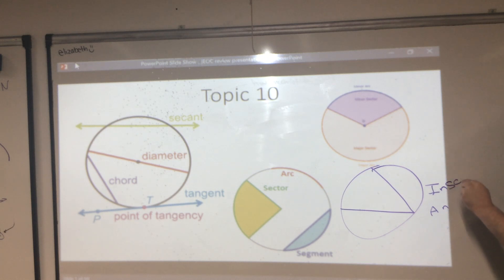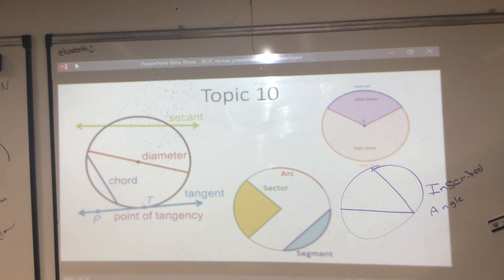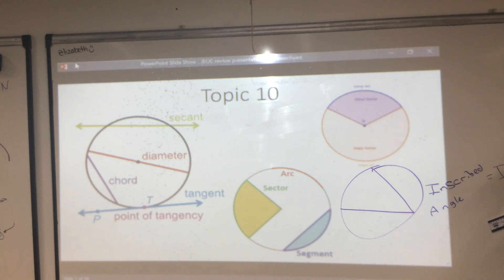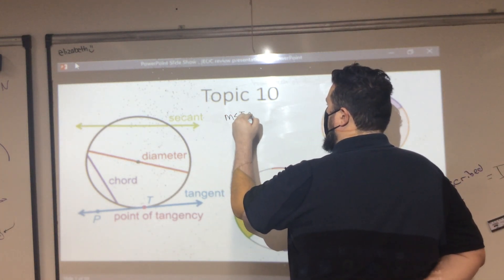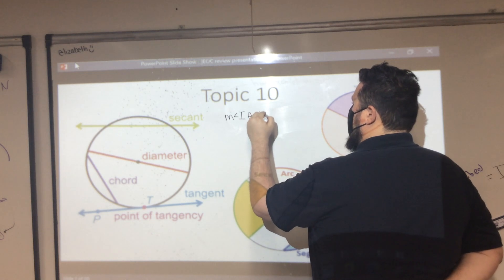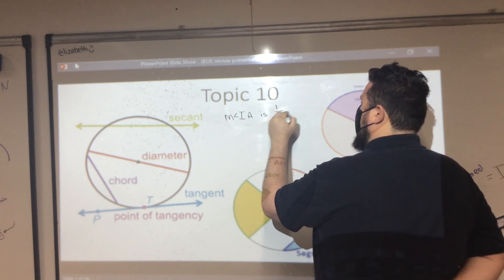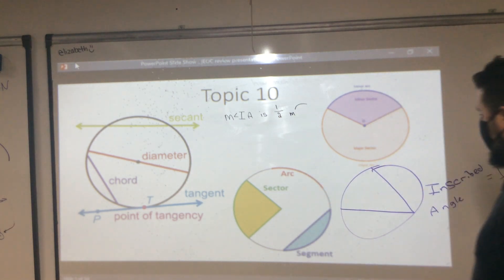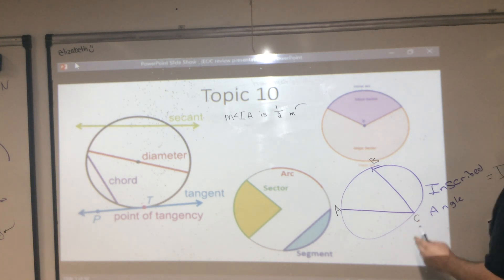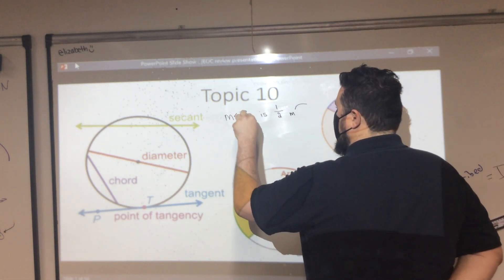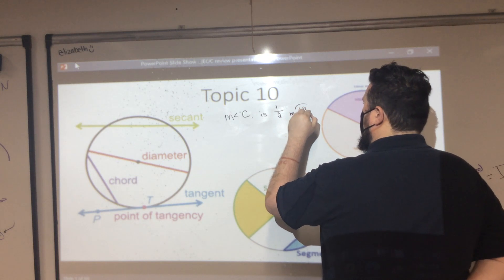Inscribed angle — perfect. The inscribed angle, let's call it IA — the measure of the inscribed angle is one half the measure of the arc. So let's call this arc AB. The measure of angle C is one half of arc AB.